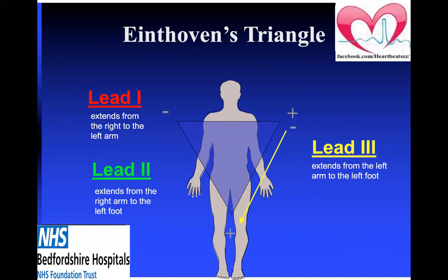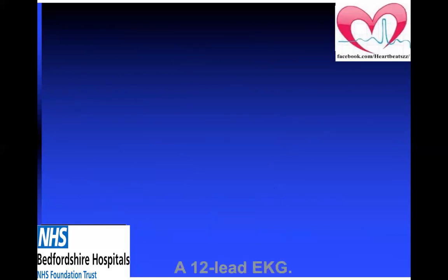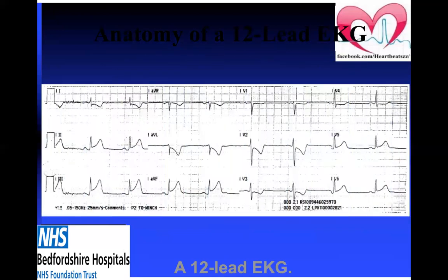Other than these limb leads, there are also chest leads: V1, V2, V3, V4, V5, V6. And there are augmented limb leads as well: AVL, AVR, AVF, and leads one, two, and three. So six limb leads and six chest leads — if we put them all together, these are the types of recordings we will notice.